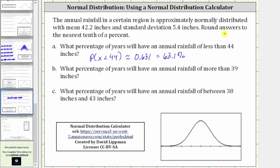So now we have the percentage rounded to one-tenth of a percent: 63.1%. For part B, what percent of years will have an annual rainfall of more than 39 inches?